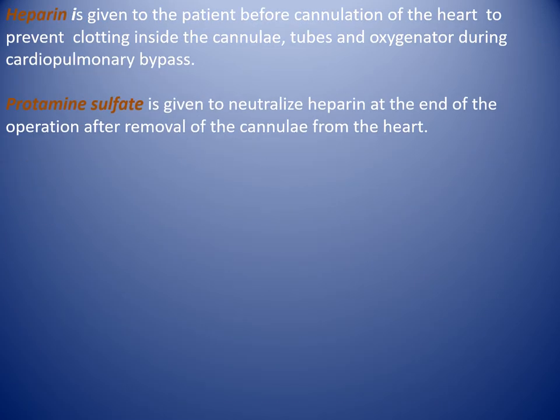Heparin is given to the patient before cannulation of the heart to prevent clotting inside the cannulas, tubes, and oxygenator during cardiopulmonary bypass. Protamine sulfate is given to neutralize heparin at the end of the operation, after removal of the cannula from the heart.